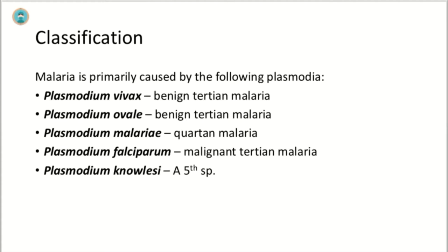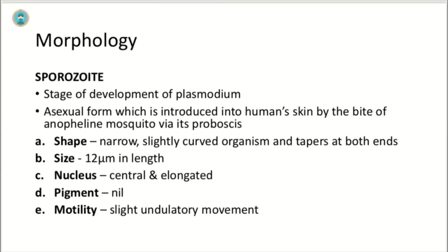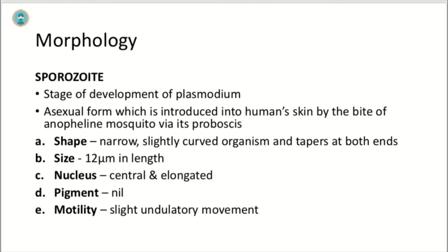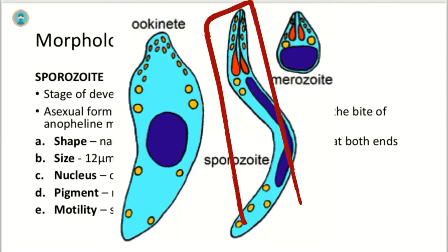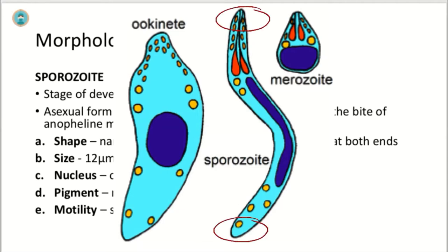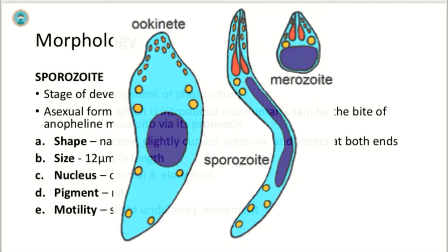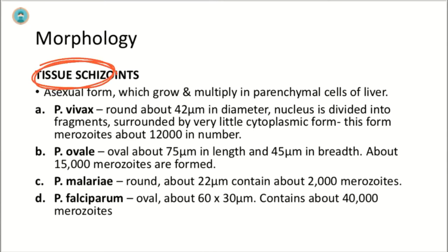Regarding the morphology of plasmodium, it has different stages. The first stage is the sporozoite, an asexual form introduced into human skin by the bite of a female Anopheles mosquito via its proboscis. It has a narrow, slightly curved shape, tapered at both ends, 12 micrometers in length. Its nucleus is central and elongated, it has no pigment, and it has a slightly undulating movement.